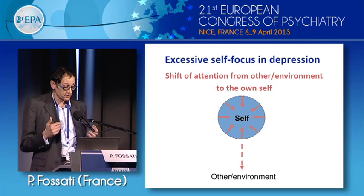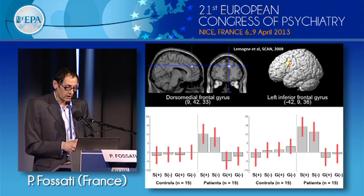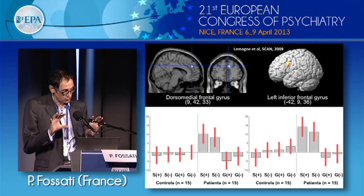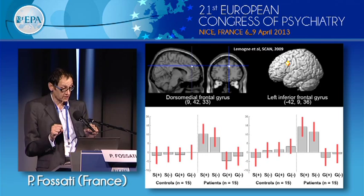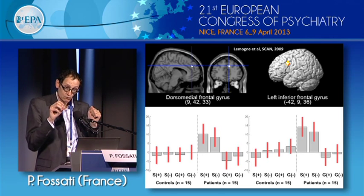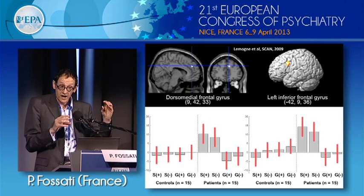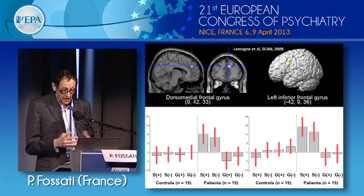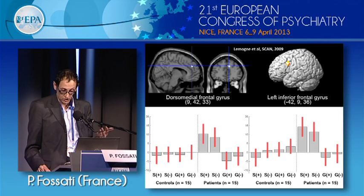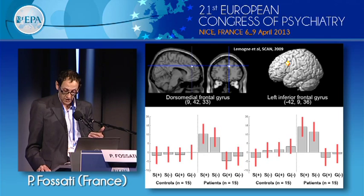What are the neural correlates of this excessive self-focus in depression? In a study conducted with Cedric Lemoine, we asked depressed patients and controls to make judgments on emotional words describing personality traits — specifically, whether the words related to them personally, or whether having the trait was good or bad in general. We found increased activation in the dorsal medial prefrontal cortex unique to depressed patients, more pronounced in the self-condition compared to the general condition. We also found increased activation in the dorsal lateral part, again unique to the self-condition and to patients compared to controls.